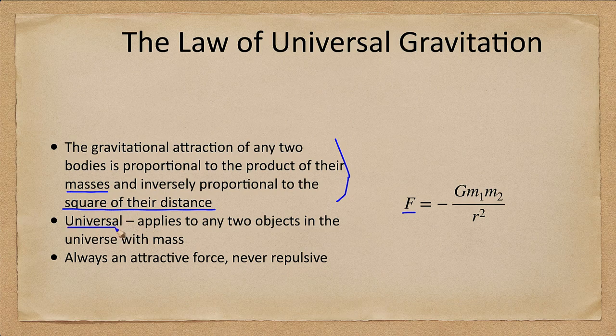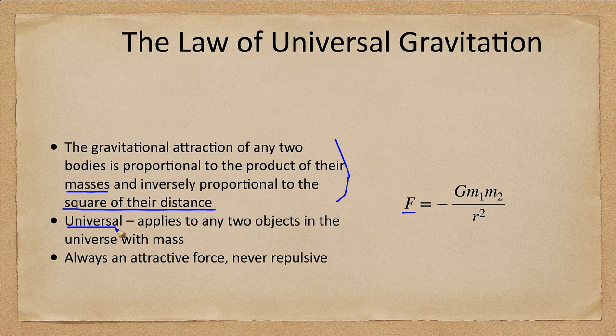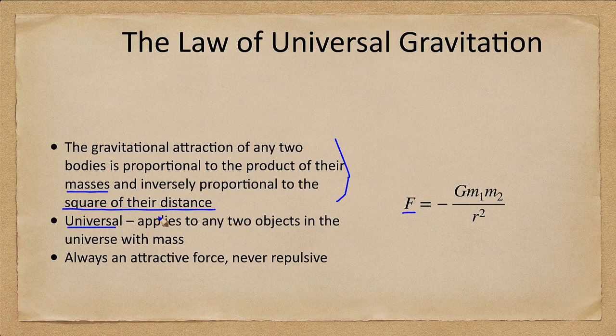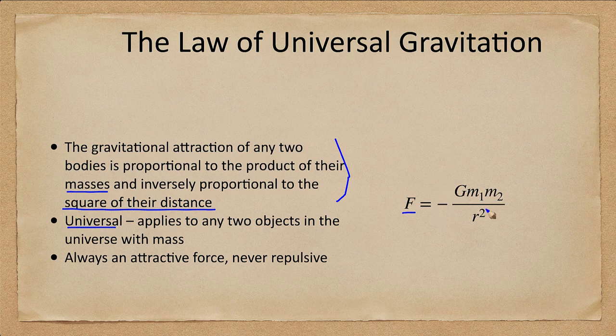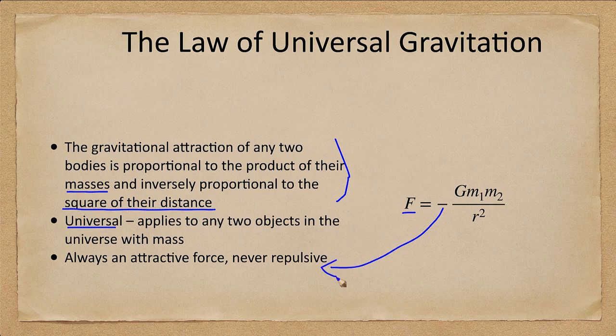We consider it universal because it applies to any two objects in the universe with mass. So you could figure out the force of attraction between yourself and the moon. All you need is the distance between you and the moon and the masses of the moon, the mass of yourself, and the gravitational constant and you could calculate that force.